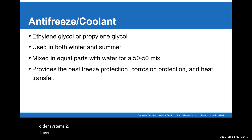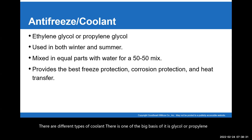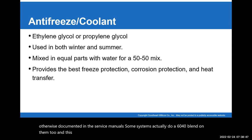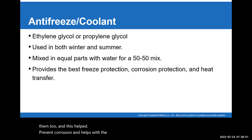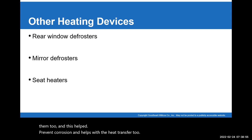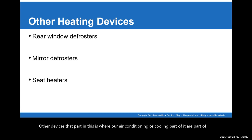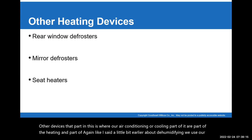There are different types of coolant. One of the big bases is ethylene glycol or propylene glycol as part of the mixture. You want to make sure your blends are 50-50 unless otherwise documented in the service manuals — some systems actually do a 60-40 blend. This helps prevent corrosion and helps with heat transfer too.